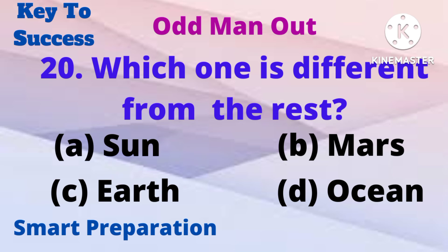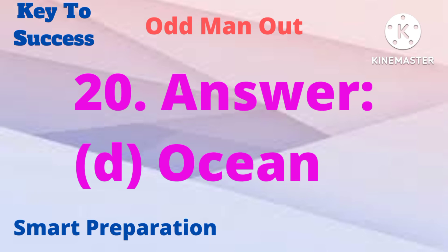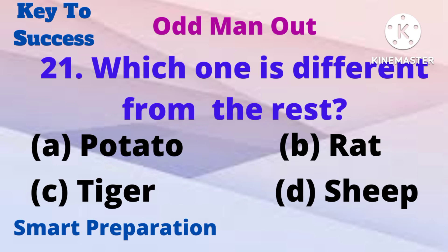Which one is different from the rest? A) sun, B) Mars, C) earth, D) ocean.